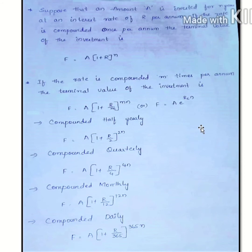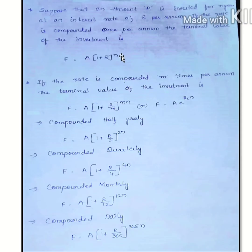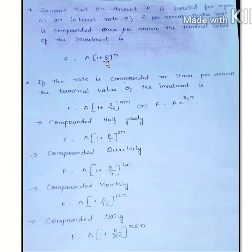Suppose that an amount A is invested for N years at an interest rate of R per annum. If the rate is compounded once per annum, we want to find the terminal value of the investment — that is, the value at 2 years, 3 years, 10 years — at a given period of time and at a given rate of interest.